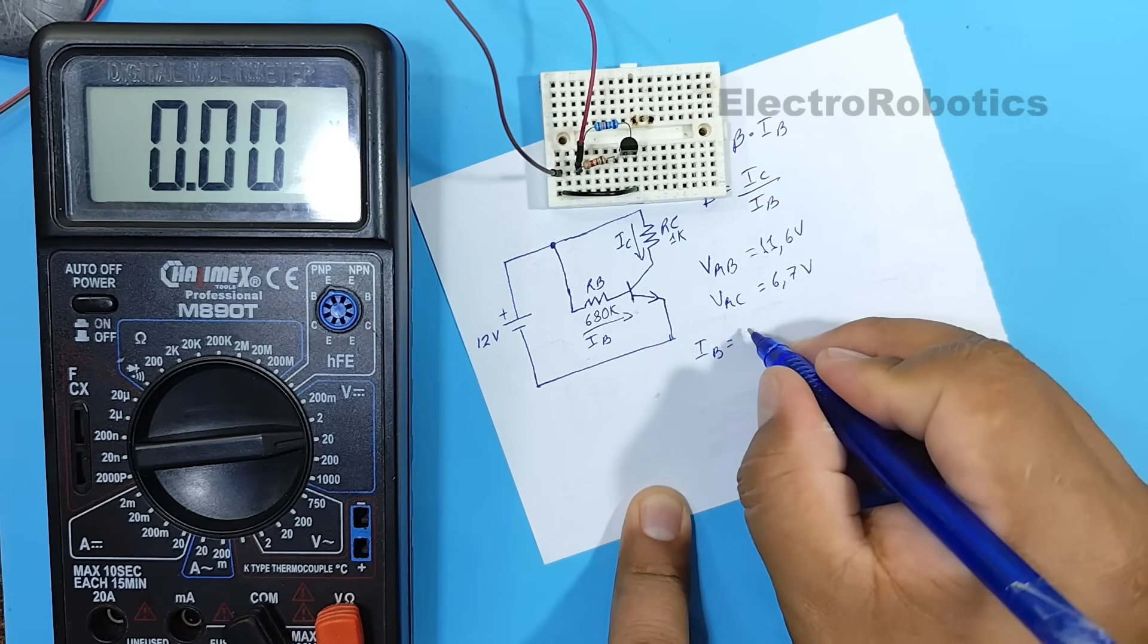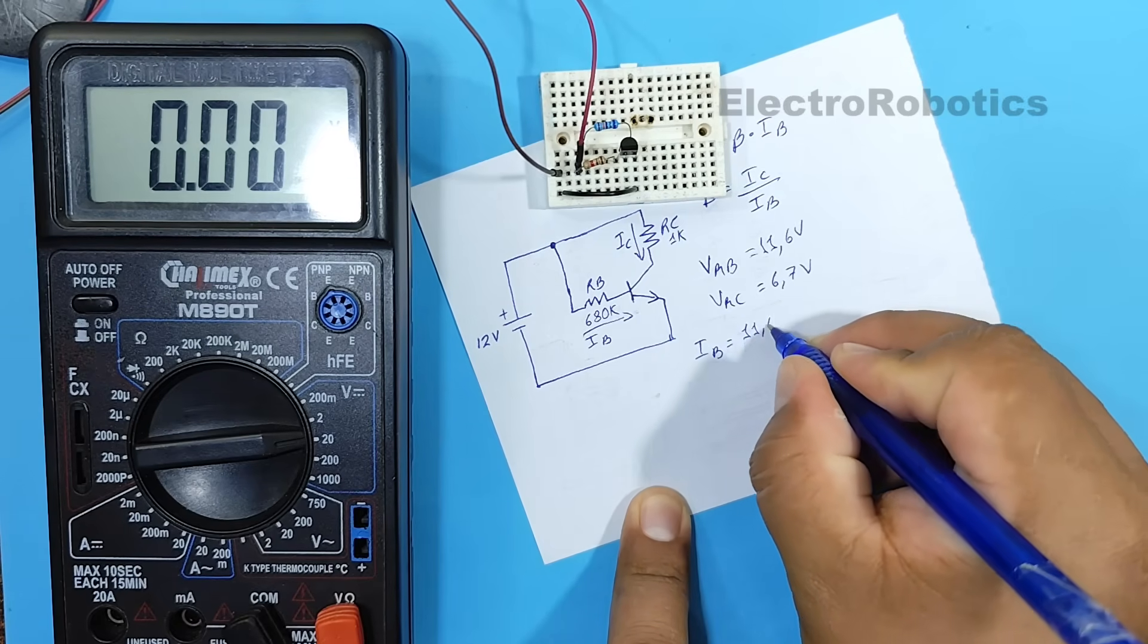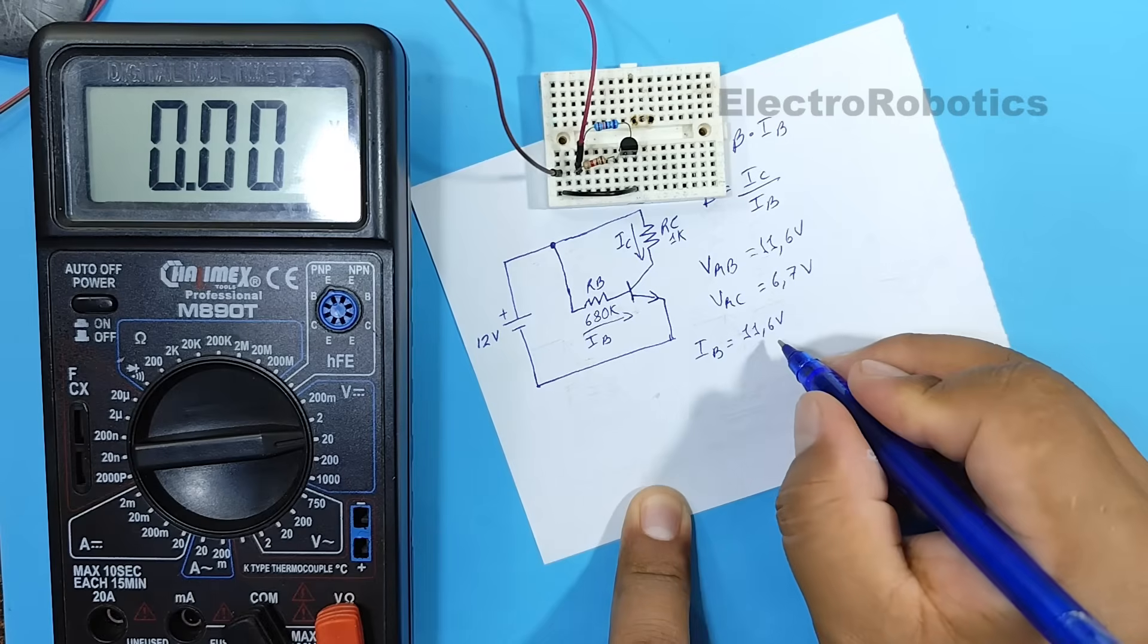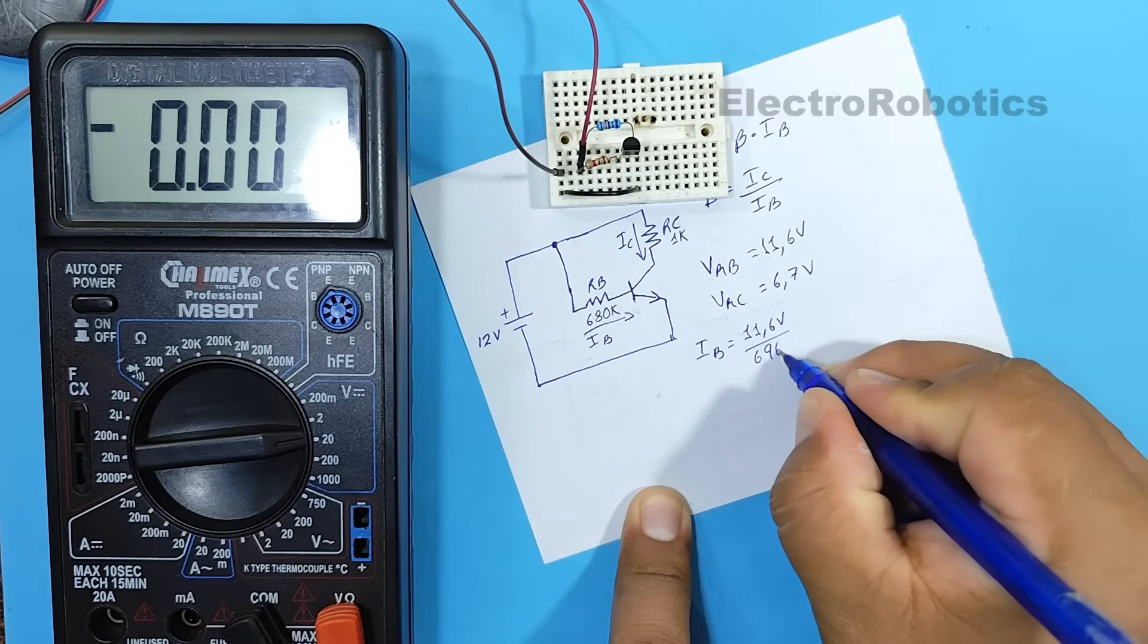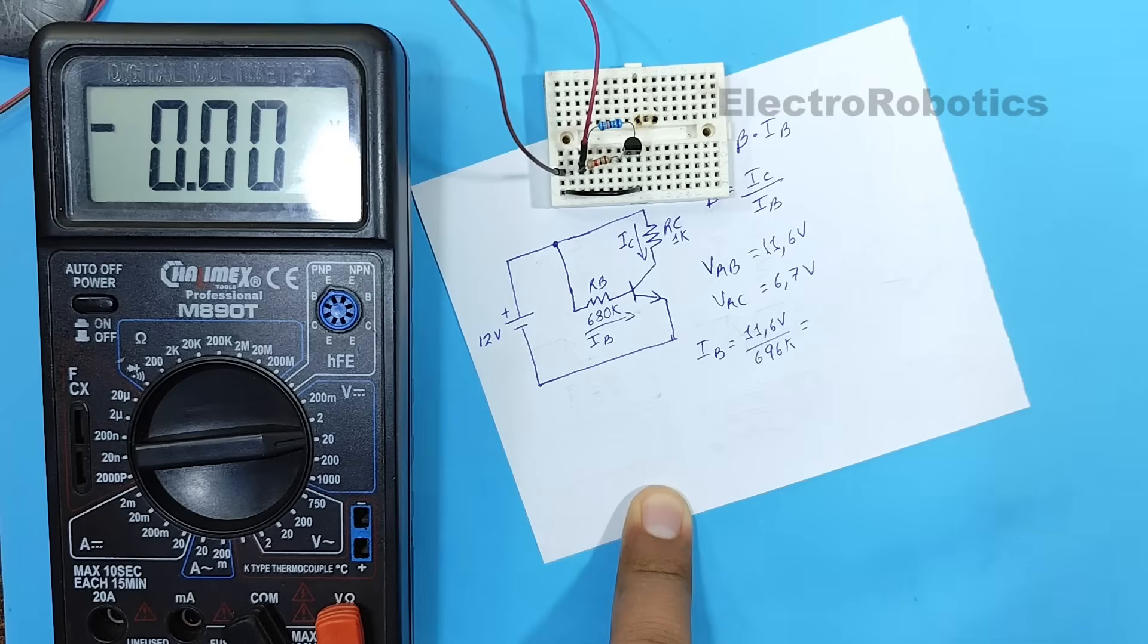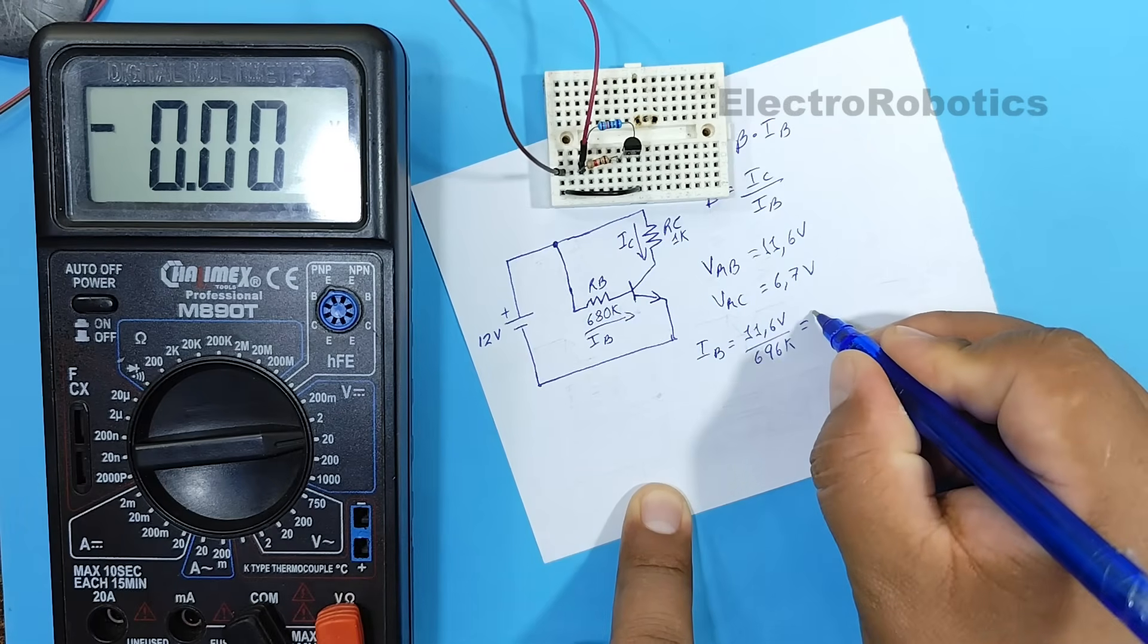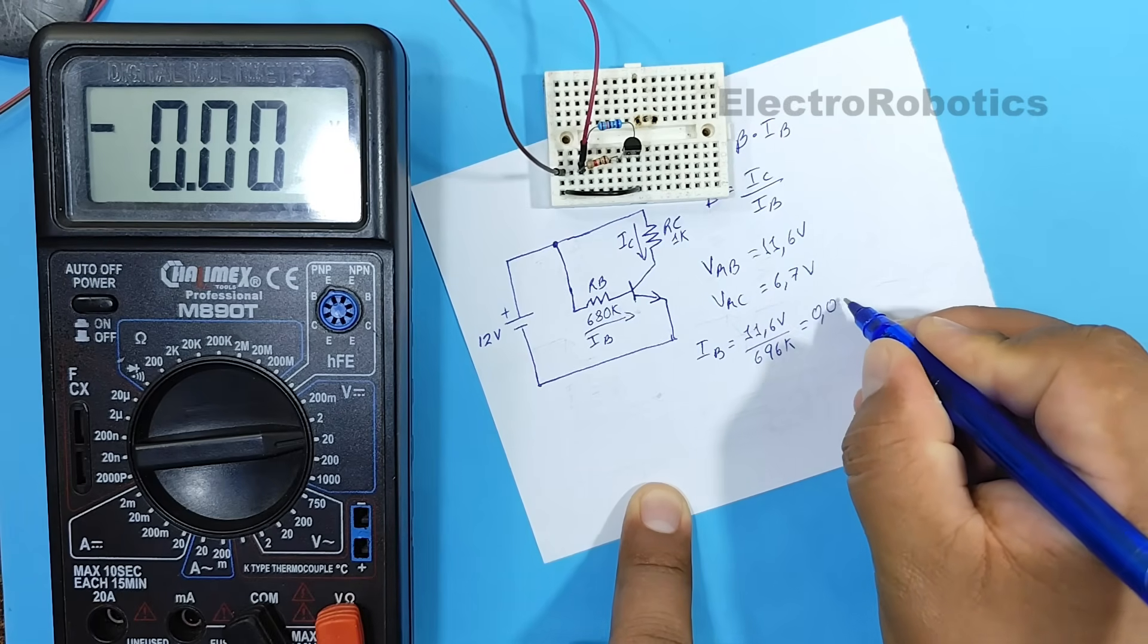So, the base current would be equal to 11.6 volts divided by 696 kiloohms. This would give us 0.0166 milliamps.